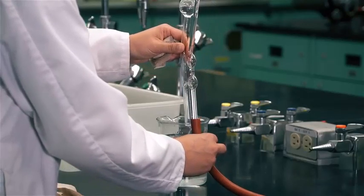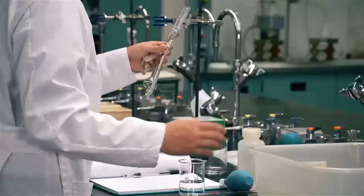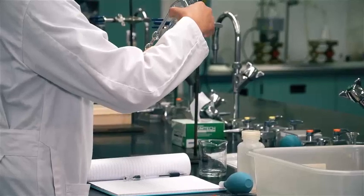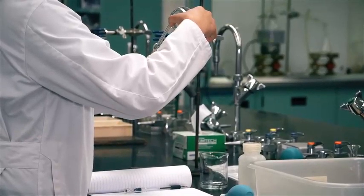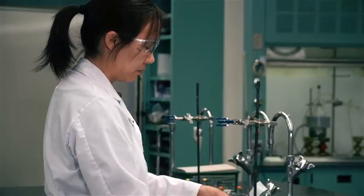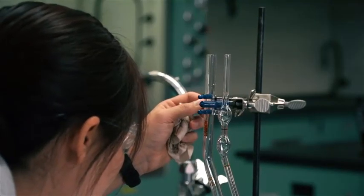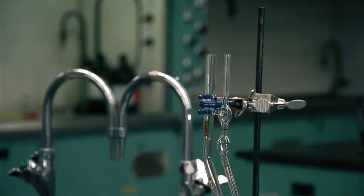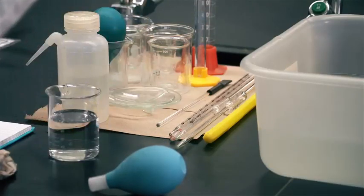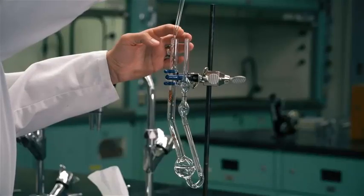Rinse the viscometer with the solution whose flow time is to be determined. Carefully clamp the viscometer on the wide leg just above the bridge in a vertical position. Using a volumetric pipette, introduce 10 mL of sample into the large bulb of the viscometer.